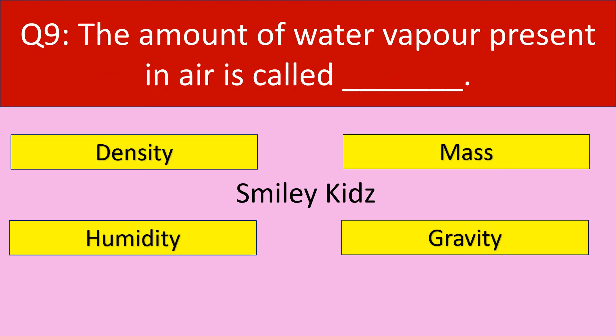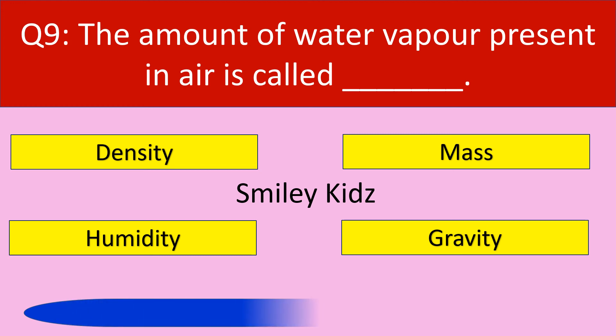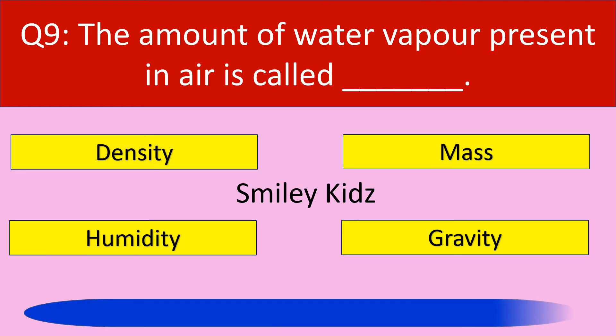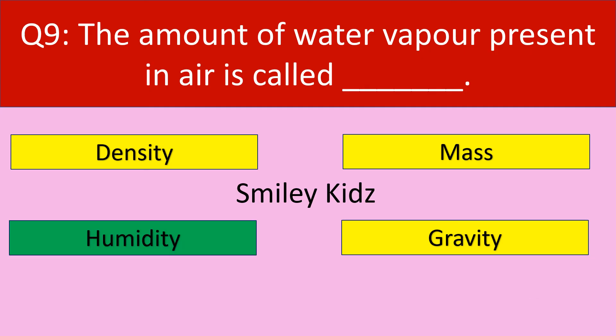Moving to question number 9. The amount of water vapor present in air is called — your options are density, mass, humidity, gravity. The correct answer is humidity. The amount of water vapor present in air is called humidity.